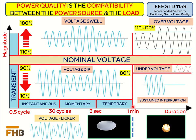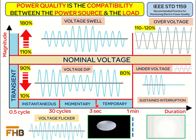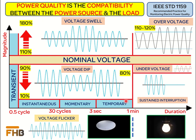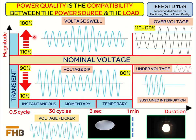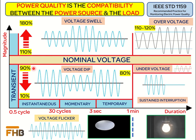Short duration variations can either be instantaneous, momentary, or temporary based on the duration as defined in the graph here. First, we will discuss the short duration variations in the voltage waveform. Voltage swell is the increase in RMS voltage at the power frequency for a duration from 0.5 cycle to 1 minute. Voltage sag or voltage dip is the decrease in RMS voltage at the power frequency for a duration from 0.5 cycle to 1 minute.